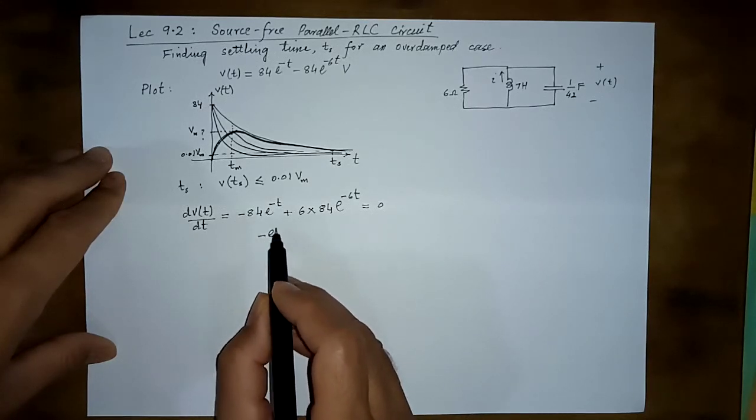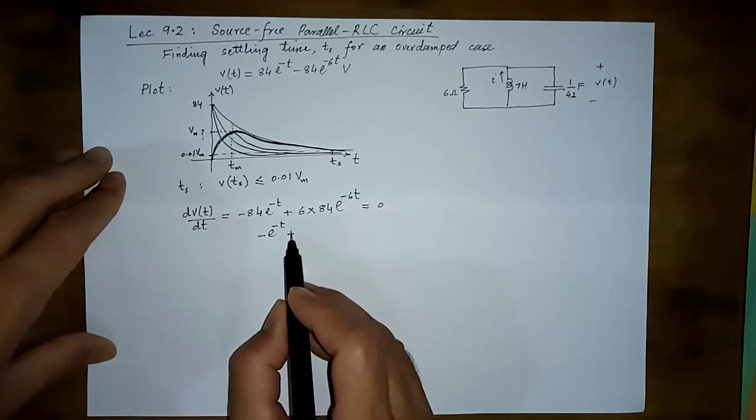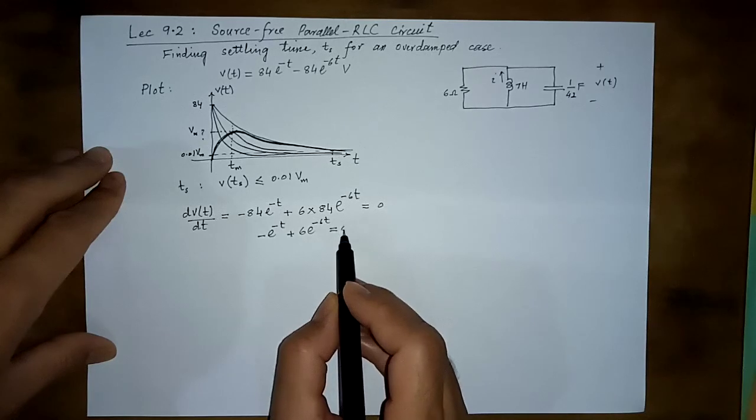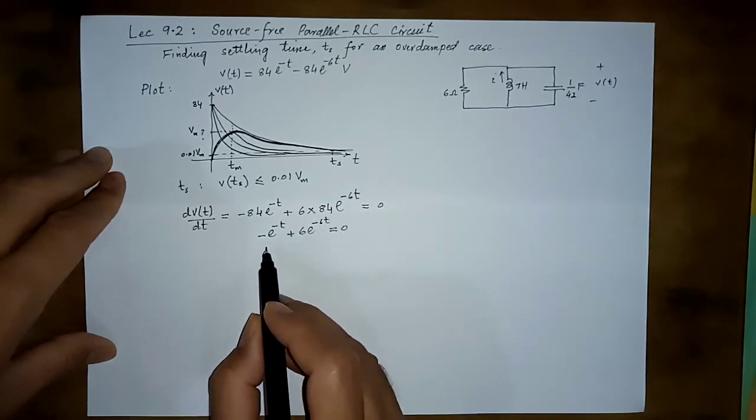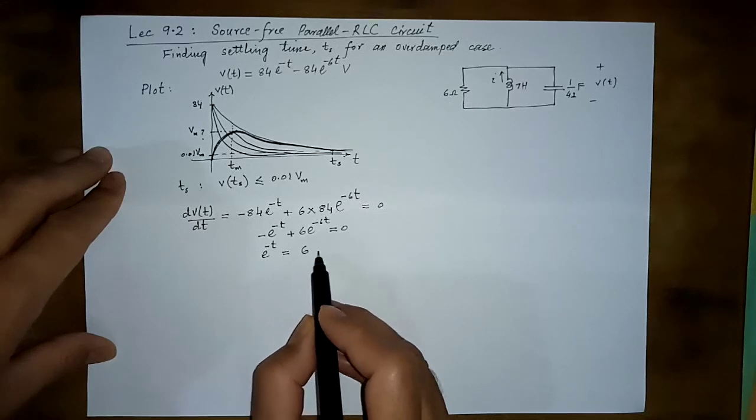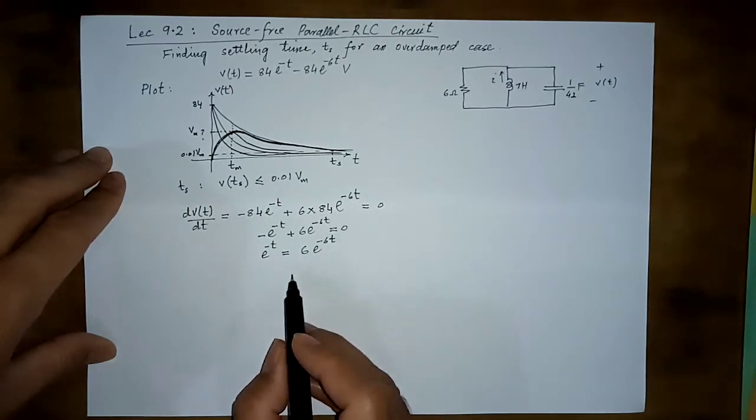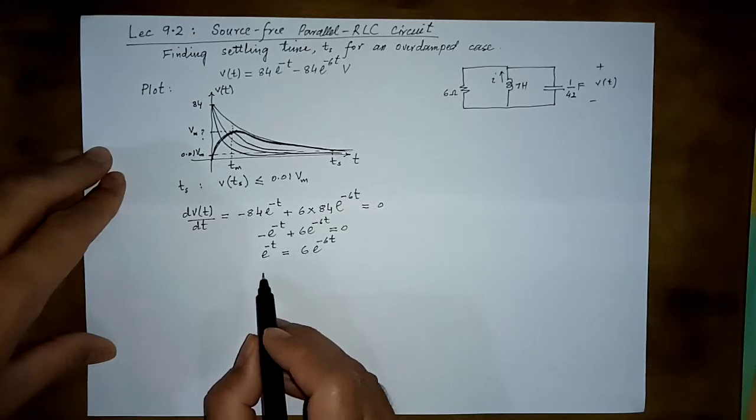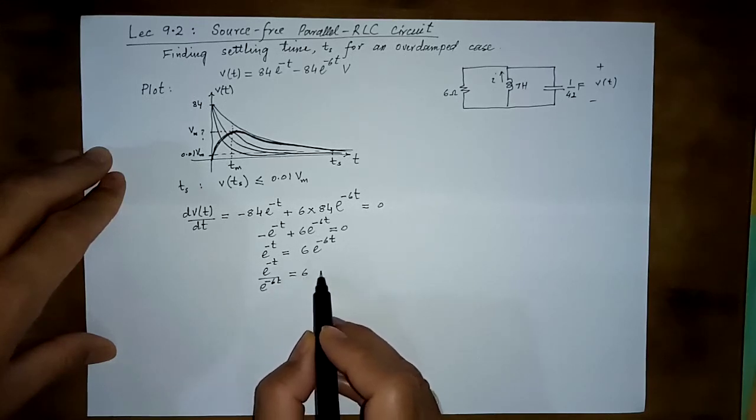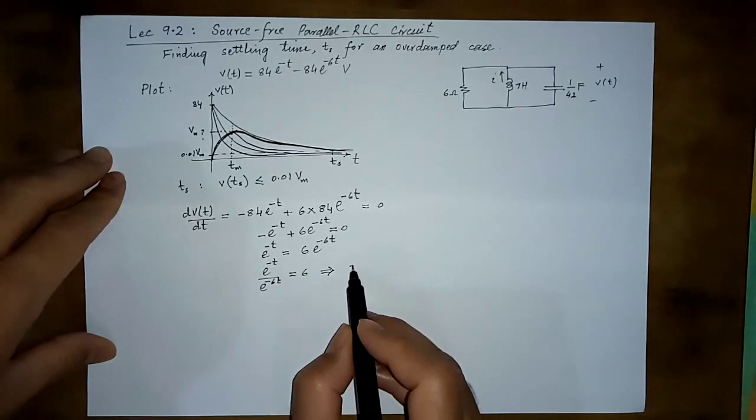minus e raised power minus t plus 6 e raised power minus 6t equal to 0, or e raised power minus t is equal to 6 e raised power minus t over e raised power minus 6t is equal to 6.